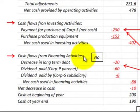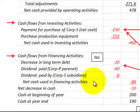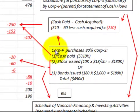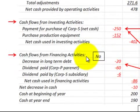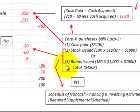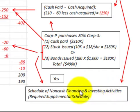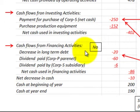For cash flows from financing activities, nothing is disclosed for the stocks issued or the bonds issued in either case. That is done on the supplemental schedule. The cash paid is disclosed under investing activities, net of cash received. The stock issued for $180,000 or the bonds issued for $180,000 are not listed under financing activities — they are included on the schedule for non-cash financing and investing activities, which is the required supplemental schedule.